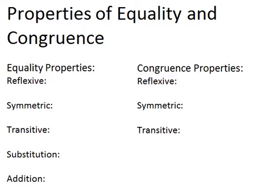In this video, we will learn about the properties of equality and congruence. Let's start with the reflexive property. This is a property of both equality and congruence. The reflexive property basically says that anything is equal or congruent to itself.